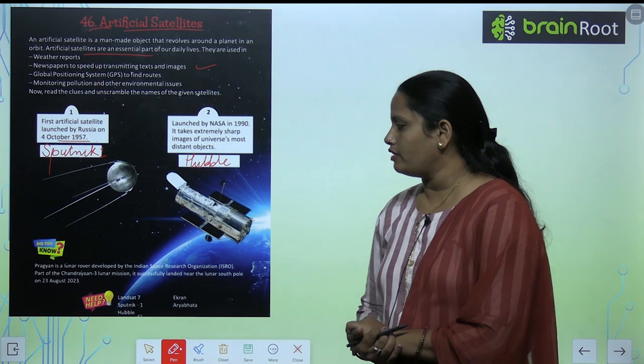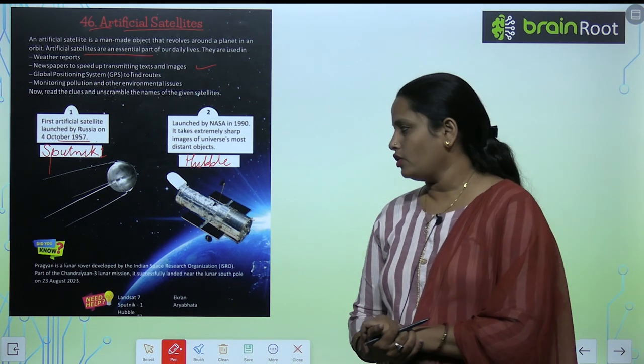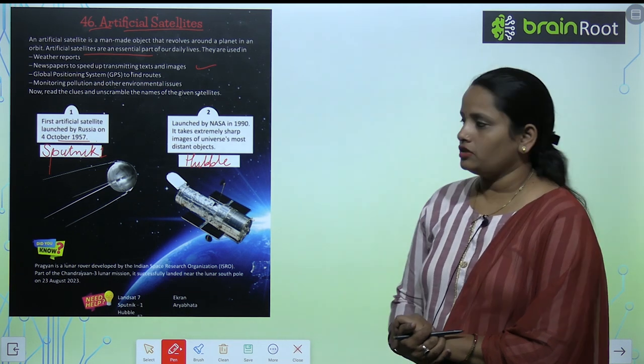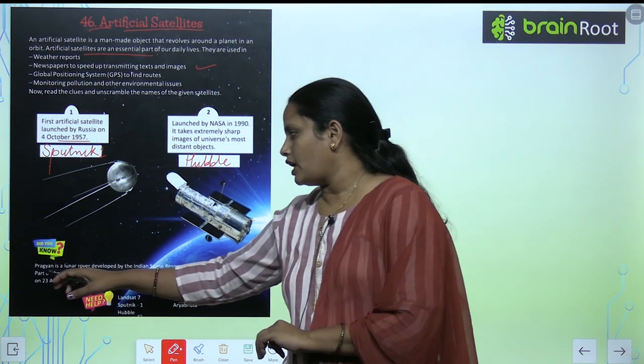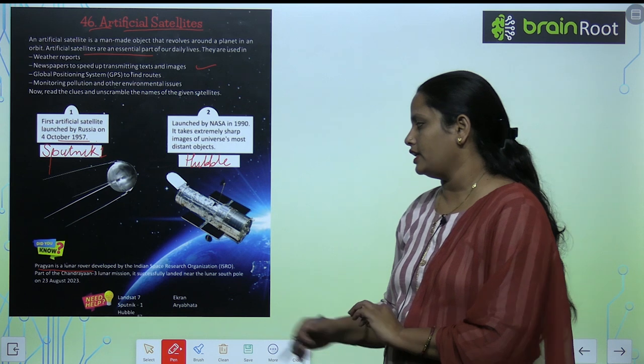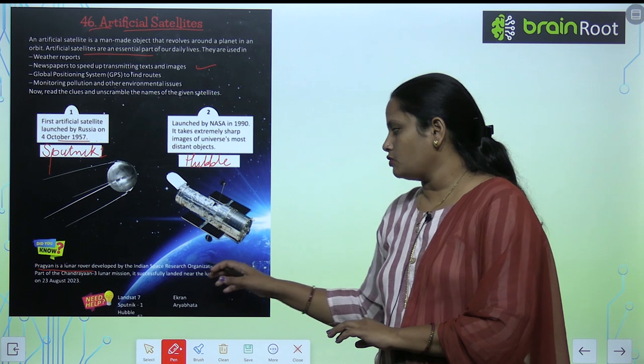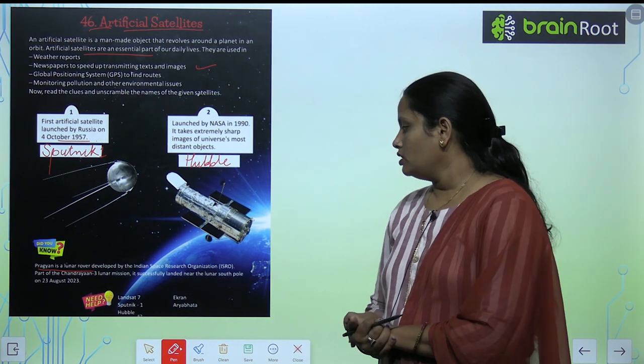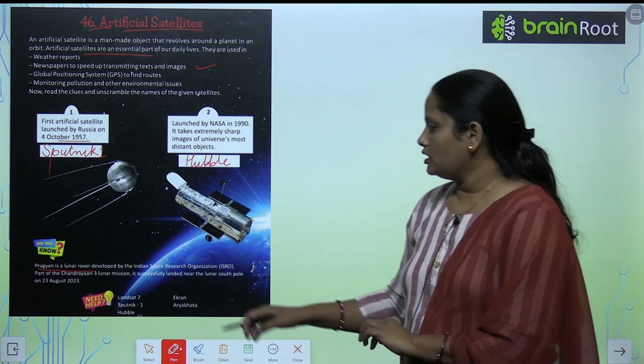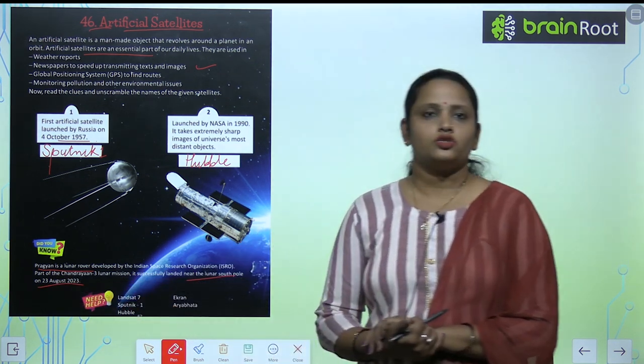Pragyan is a lunar rover developed by the Indian Space Research Organization, ISRO, as part of the Chandrayaan 3 lunar mission. It successfully landed near the lunar South Pole on 23rd August 2023.